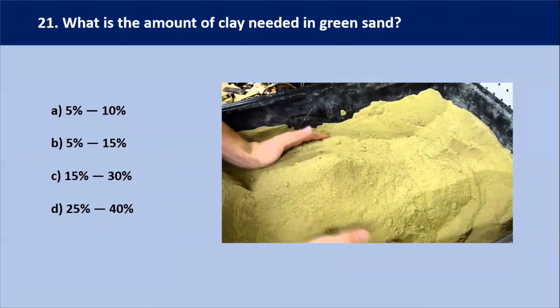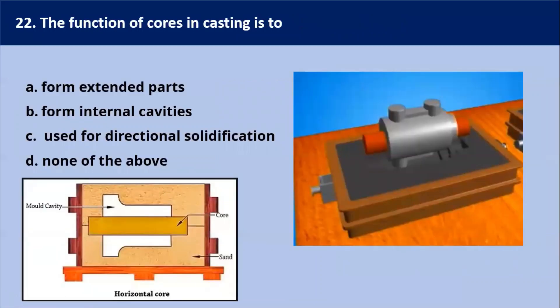Next question: what is the amount of clay needed in the green sand? In green sand, the amount of clay needed in terms of percentage composition is approximately 15 to 30 percent, and the percentage of water is around 5 percent. Our answer is C — 15 to 30 percent.